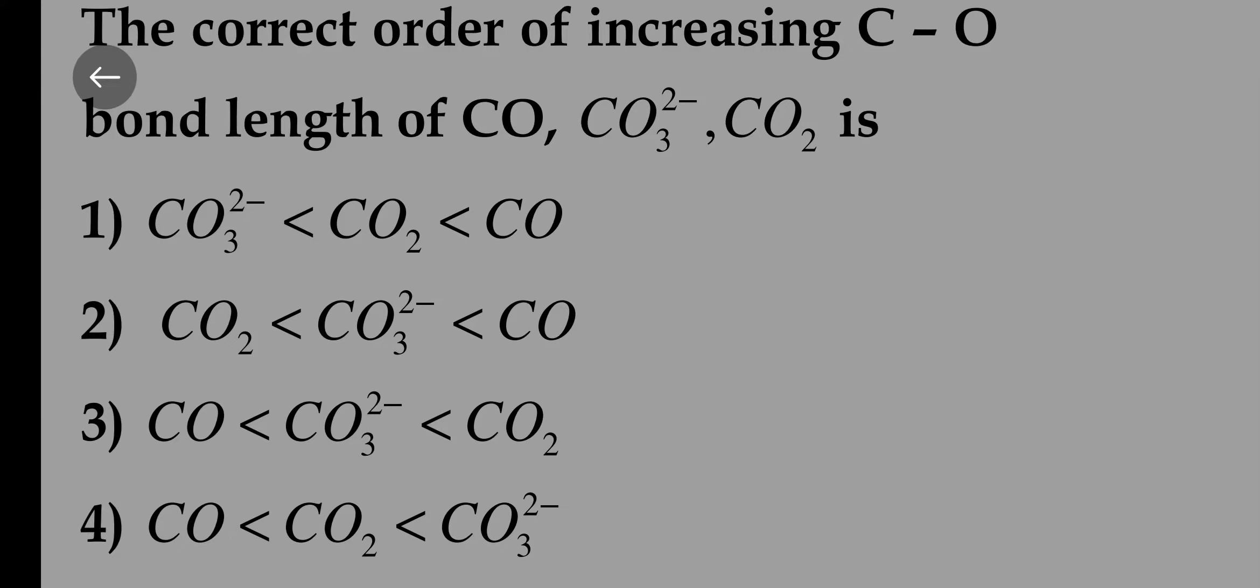The correct order of increasing CO bond length of CO, CO3 2- and CO2 is. CO is carbon monoxide, CO3 2- is carbonate, CO2 is carbon dioxide.